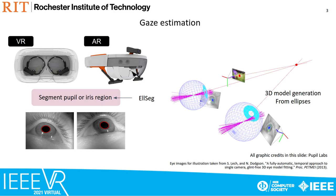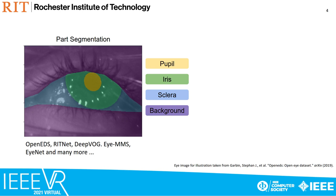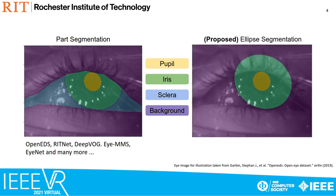LSEC attempts to improve segmentation performance of pupil and iris regions. Recent approaches design convolutional neural networks to segment eye images into constituent visible parts: the pupil, iris, sclera, and skin, also referred to as background. In this work we propose modifying this four-class part segmentation paradigm to instead segment direct elliptical structures. We show that doing so yields numerous benefits towards producing accurate ellipses, which in turn benefits gaze estimation.